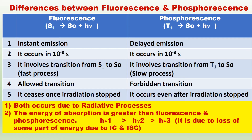What are the differences between fluorescence and phosphorescence? Fluorescence involves transition from S1 to S0 with the emission of light h-nu-2. This fluorescence occurs in 10 to the power of minus 8 seconds, so it is instant emission. Fluorescence is called instant emission, whereas phosphorescence is called delayed emission. Phosphorescence involves transition from T1 to S0, and this transition is a slow process, whereas fluorescence is a fast process.